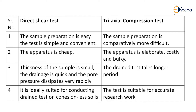The apparatus used for direct shear test is cheap — the apparatus is a consolidometer which is cheap — whereas the apparatus used in triaxial compression test is elaborate, costly, and bulky.